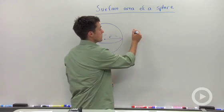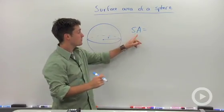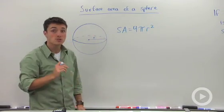Well, to find the surface area of a sphere, you're going to use the formula that the surface area equals four times pi times the radius squared.